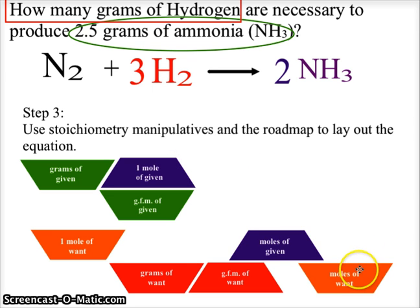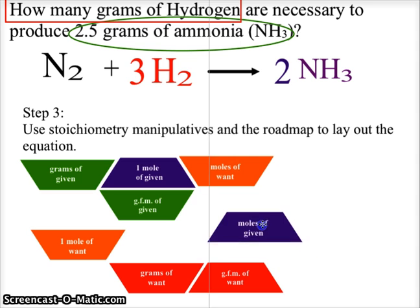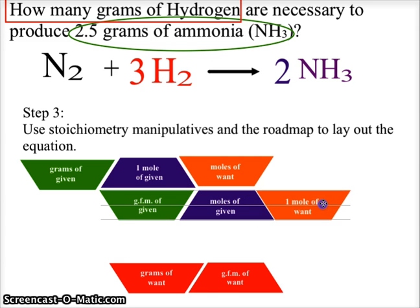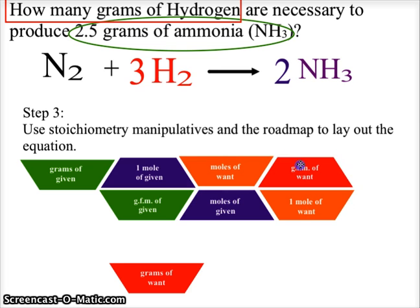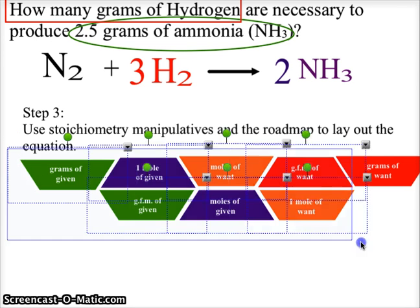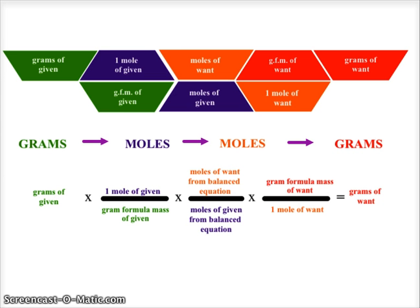We then convert to moles of what we want and cancel the moles of given. The next step is to get rid of the moles of what we want and compare that to the gram formula mass of what we want, giving us grams of what we want as our final solution. So the roadmap breaks down as: grams to moles to moles to grams — the roadmap is consistent.